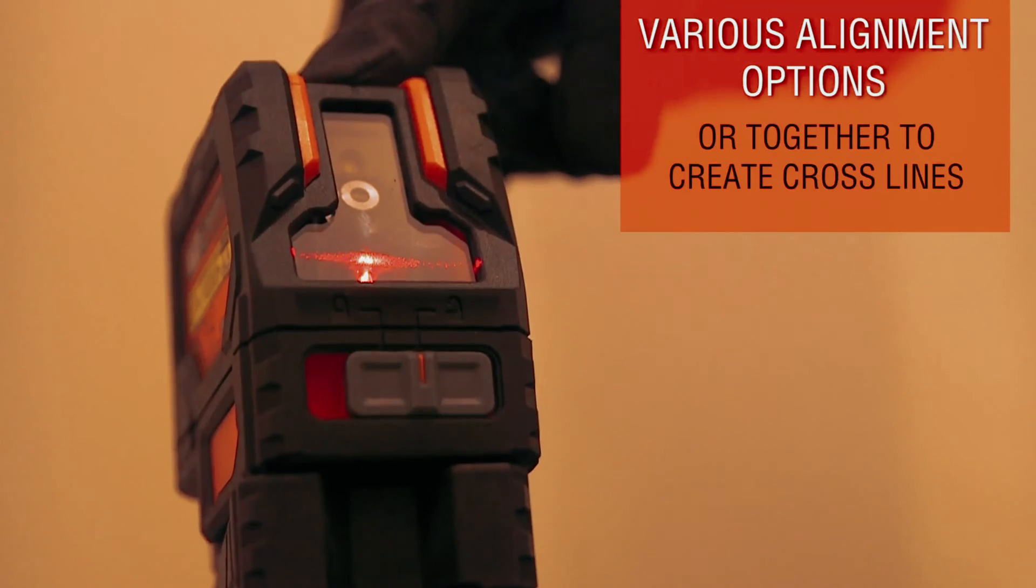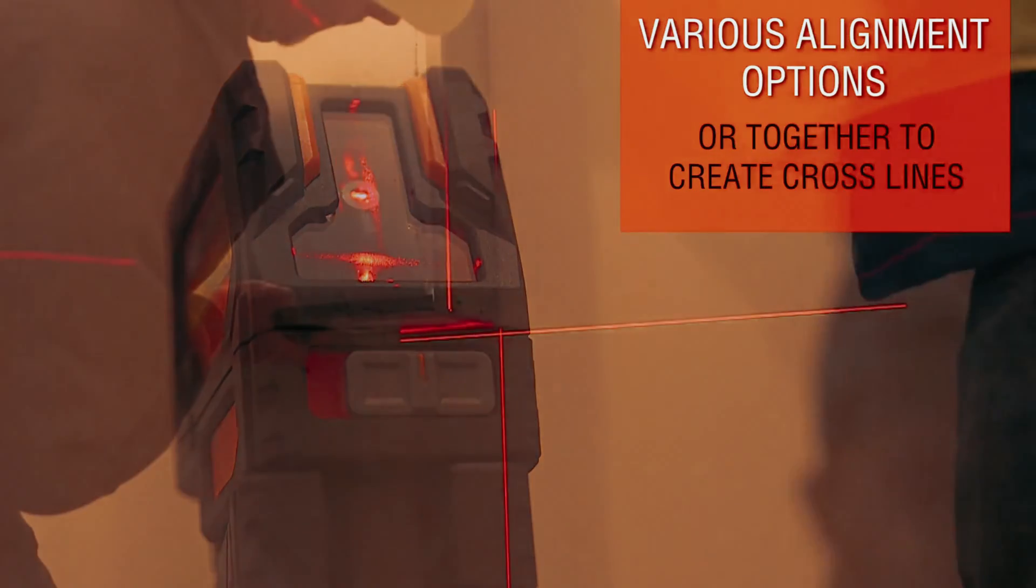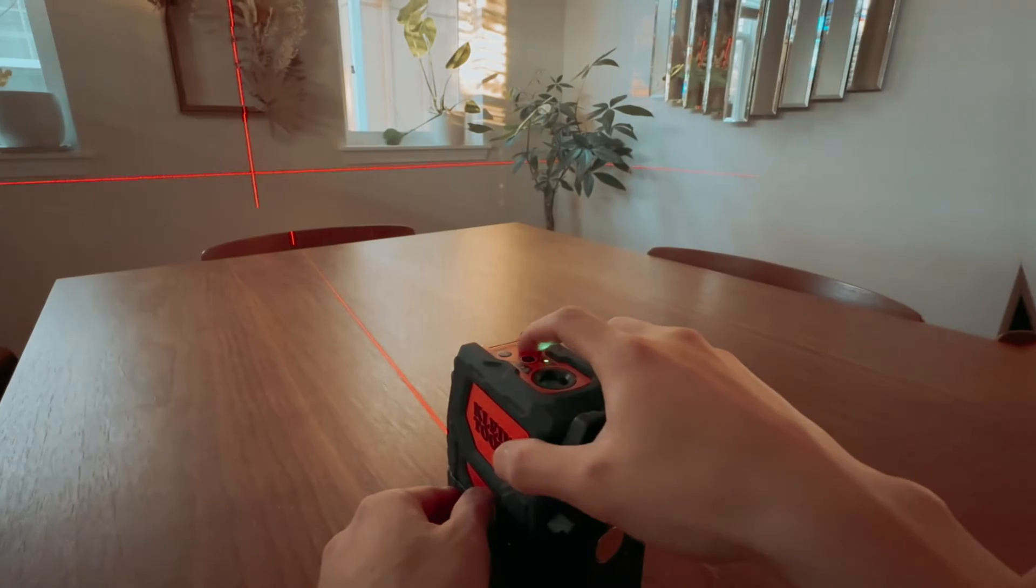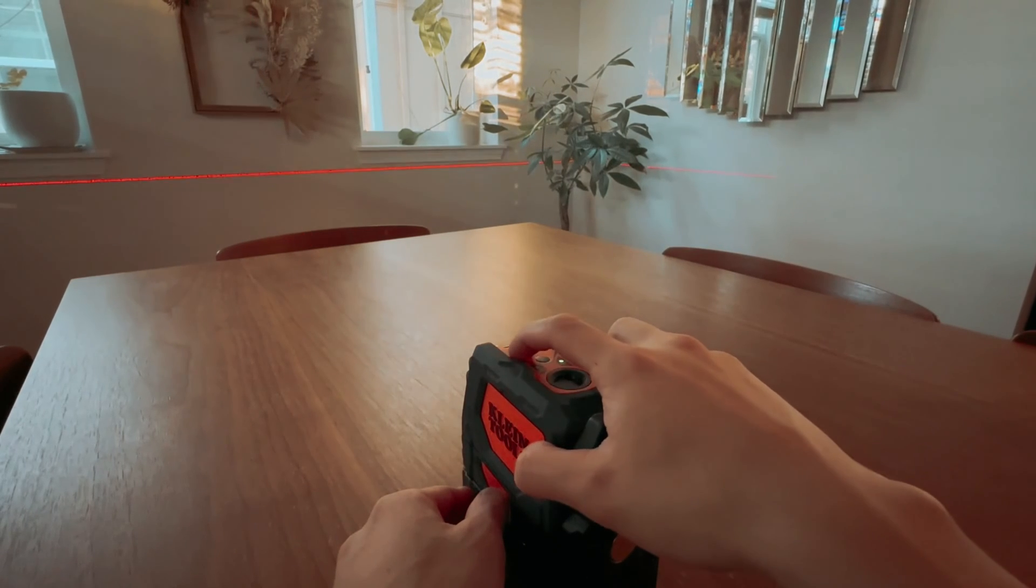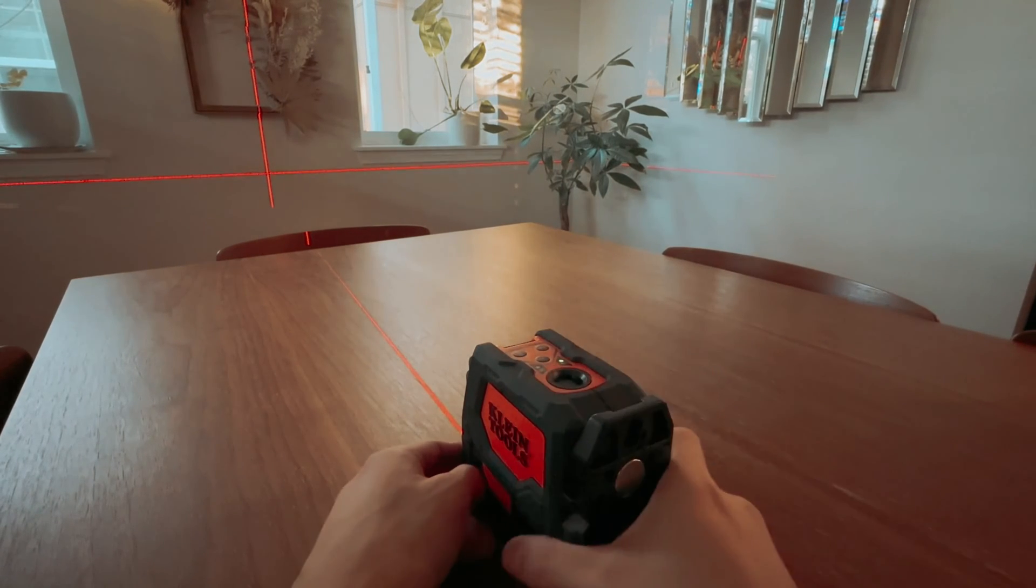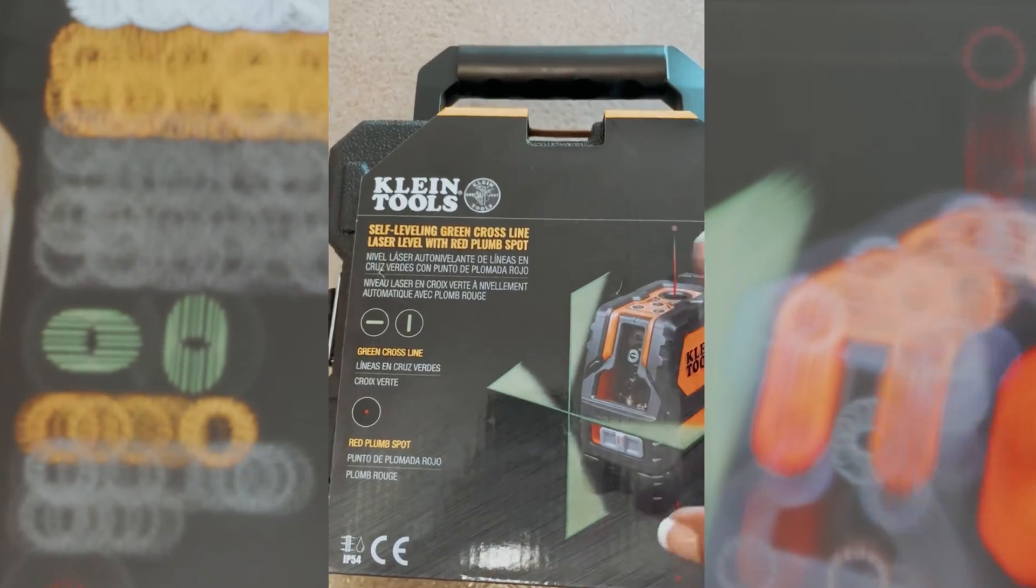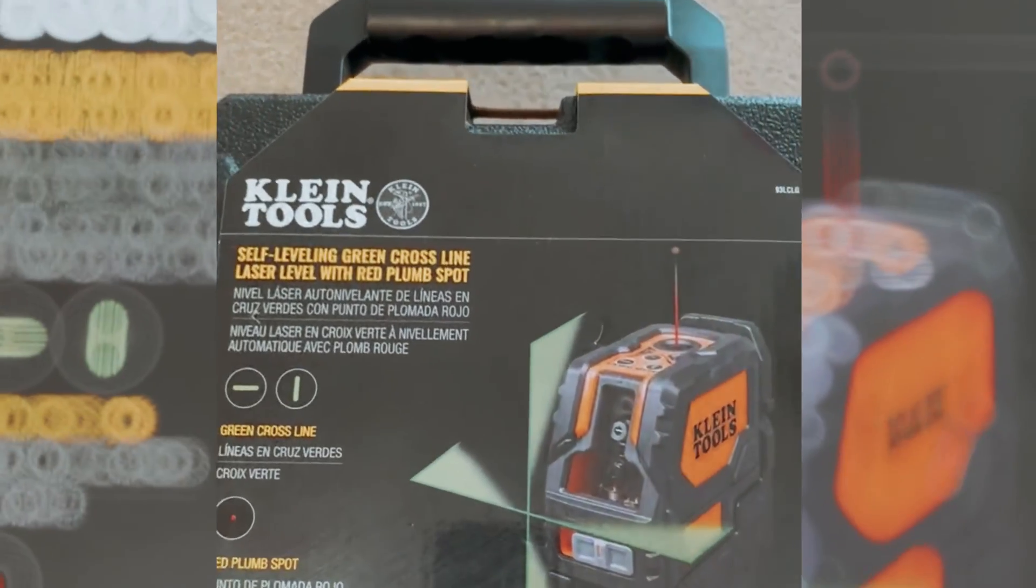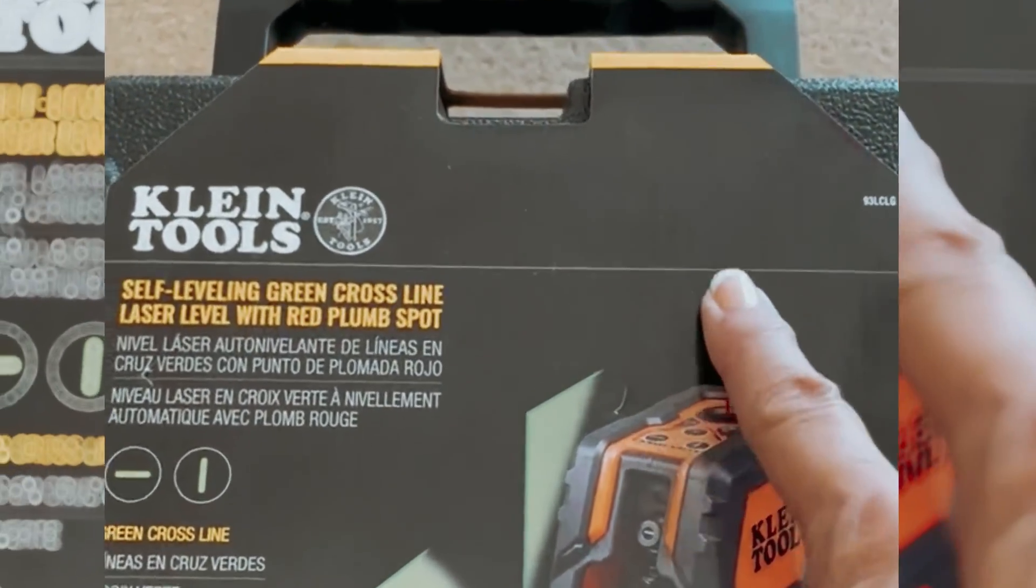The self-leveling pendulum design of the Klein Tools 93LCLS Laser Level allows for quick and accurate plumb and level reference lines, making setup a breeze. Additionally, the low battery indicator and easily accessible battery compartment ensure hassle-free operation.